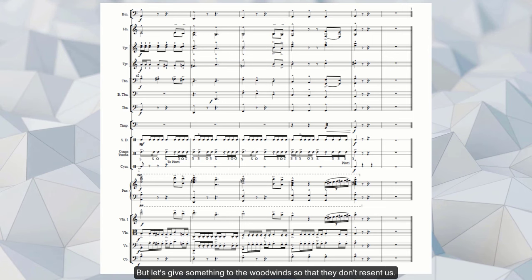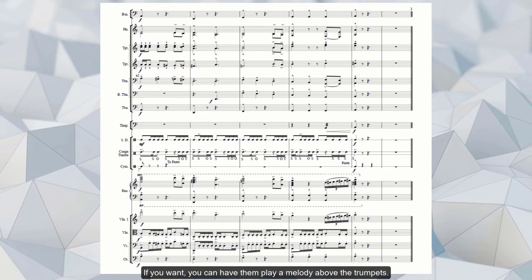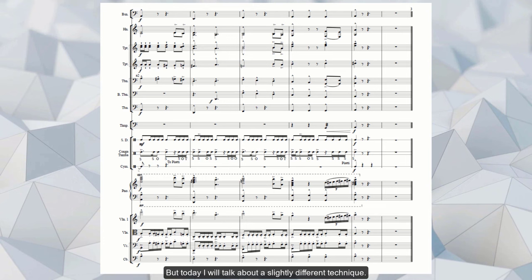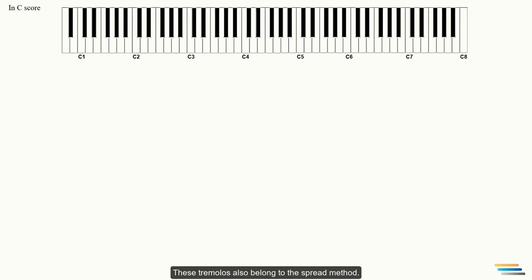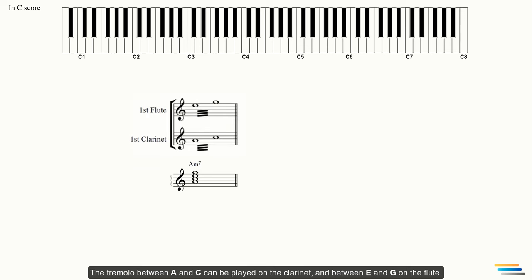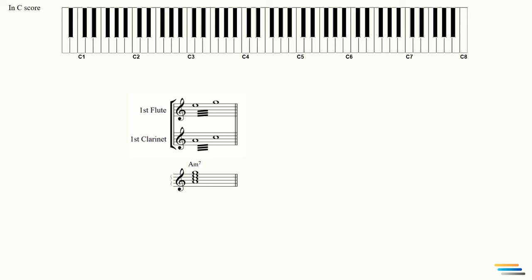But let's give something to the woodwinds so that they don't resent us. If you want, you can have them play a melody above the trombones. But today I will talk about a slightly different technique – unmeasured tremolo. These tremolos also belong to the spread method. Unmeasured tremolos or trills are useful tools for the orchestration. For example, if the sketch has a four-part chord, but you only have two instruments, then the tremolo technique will help you play that chord. The tremolo between A and C can be played on the clarinet and between E and G on the flute. The rapid transition or alternation of these four voices gives the listener the impression of a four-part harmony playing at the same time. That's why I classify this technique as a spread method.